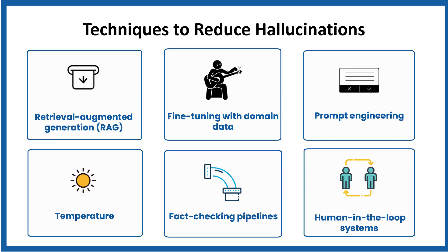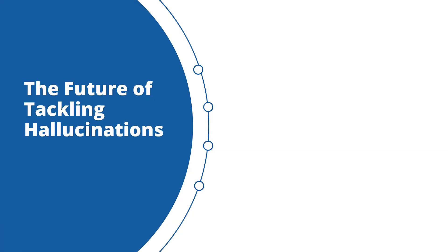Human-in-the-loop systems can reduce hallucinations. Use LLMs to draft, but humans to review — in sensitive domains such as legal, healthcare, and finance. Instead of allowing the AI model to work fully autonomously, human-in-the-loop systems ensure that in sensitive or high-risk scenarios, a human expert gets the final say. The benefit is highest safety. The drawback is less automation.